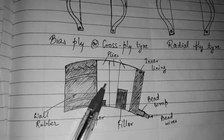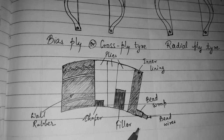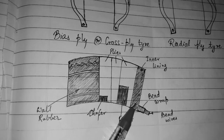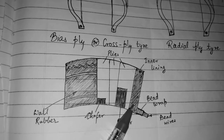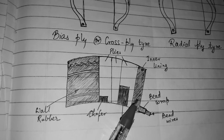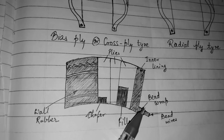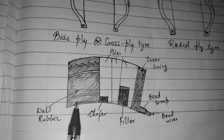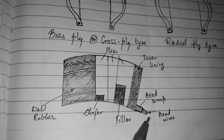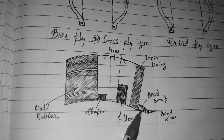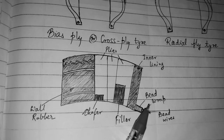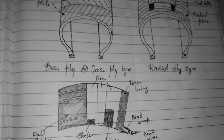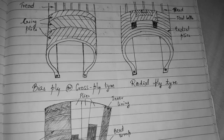Inside there is a chaffer, then the ply — cross ply or radial ply — then there is a filler and the inner lining, which you can feel with your hands if you look inside a tire. To retain the shape, there are bead wires wrapped here.